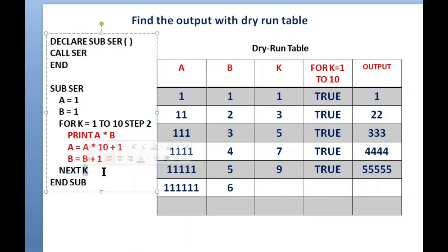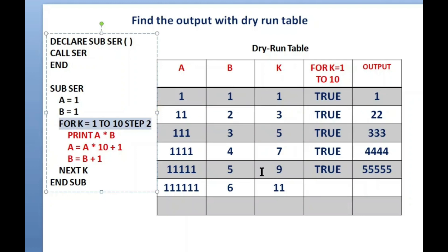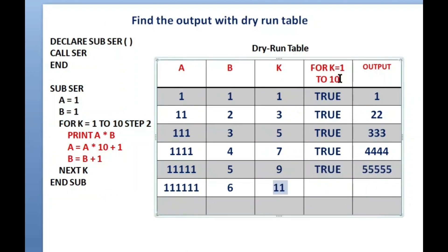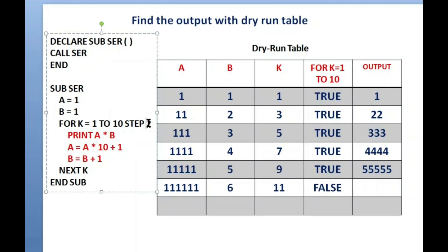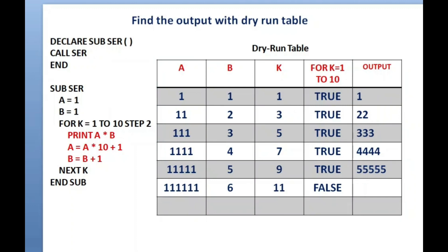When the condition is FALSE, control goes from the FOR loop directly to after NEXT K — that is END SUB. Program execution finishes and it returns to the main module where it was called. After the call there is an END statement, so the program is finished. The final output is: 1, 22, 333, 4444, 55555. This is how you dry run a program using a dry run table. Hope you are clear — thank you for watching, see you in the next video!